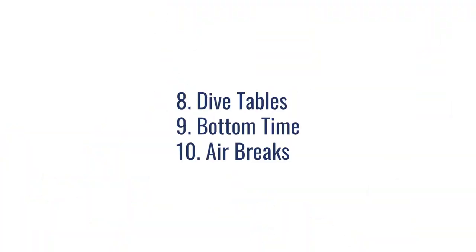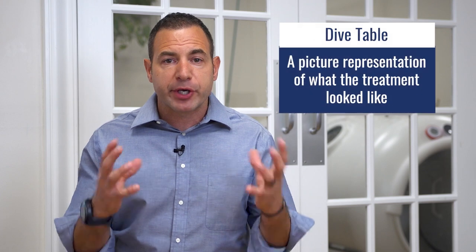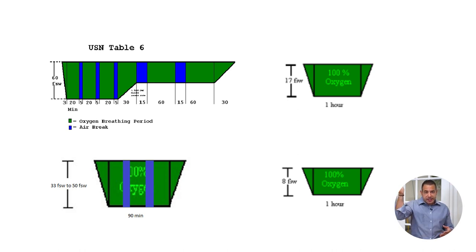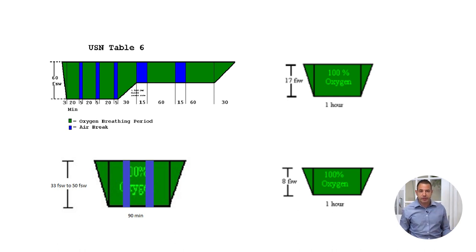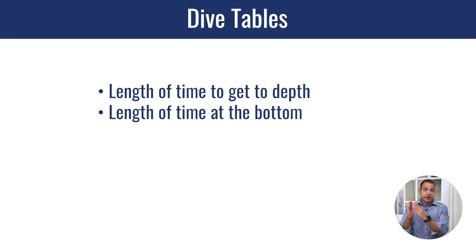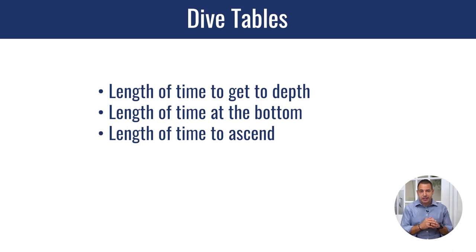Dive tables, bottom time, and air breaks. A dive table is a picture representation of what the treatment looked like. You'll see a period of descent followed by a period at bottom time — the actual treatment period — and then a period of ascent. The descent isn't a straight line; it's a curvilinear line down because you descend over a period of time. You then get your treatment for whatever period that is, and then you ascend slowly back to the surface.